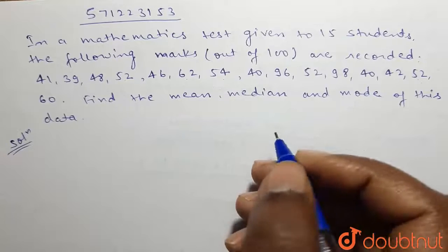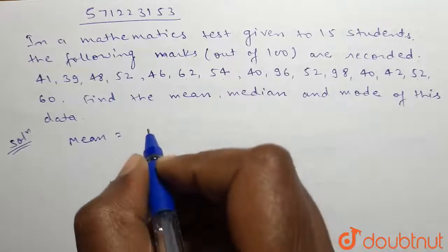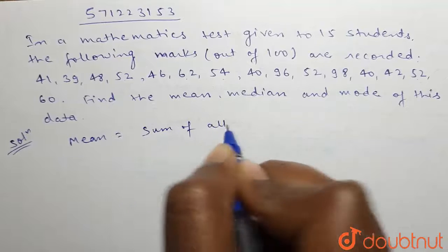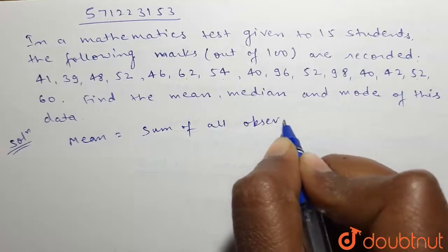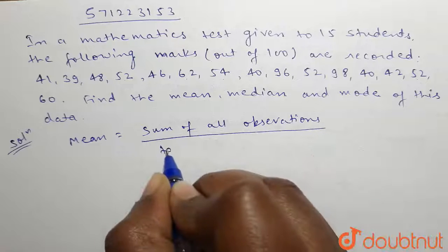Mean is equal to sum of all observations divided by total number of observations.